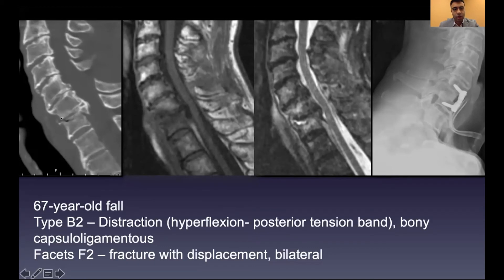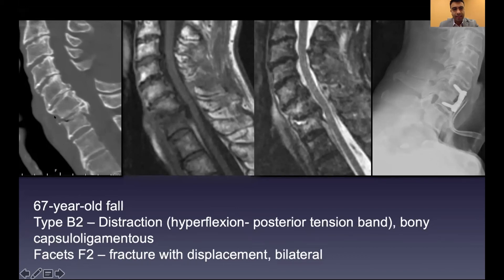Personally, I would treat this with a front-back or posterior-only procedure — you need to address this. There is obvious anterior column injury and obvious posterior column injury, requiring a 360-degree approach or at minimum a posterior-only procedure. An anterior-only procedure does not address the posterior instability, and because the fracture level is above where the fixation was placed, you could set this patient up for something bad. With all these osteophytes, there is minimal disc and the anatomy is very difficult to interpret.